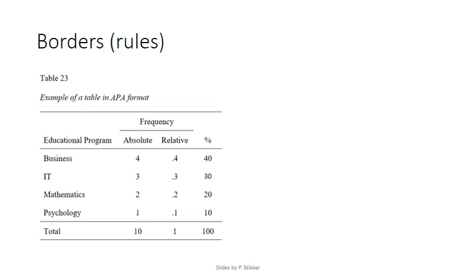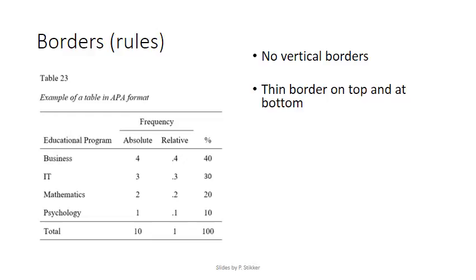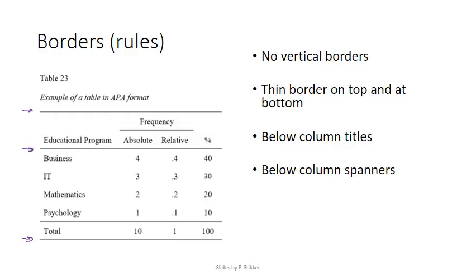APA also has some guidelines connected to borders — in the APA manual, these are called rules. As you might notice, there are no vertical borders; the APA manual does not mention using them. Horizontal borders can be added by placing one on top and at the bottom of the entire table. You can also add one below the column titles or below a column spanner.